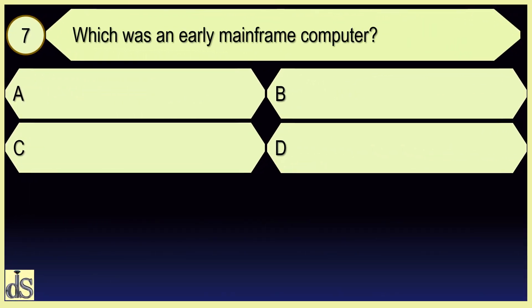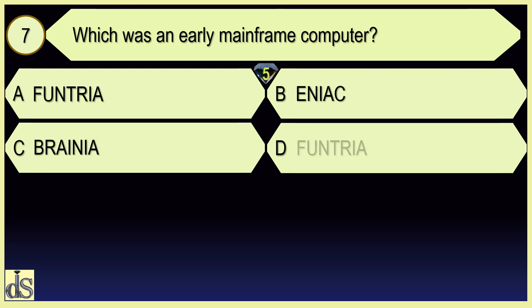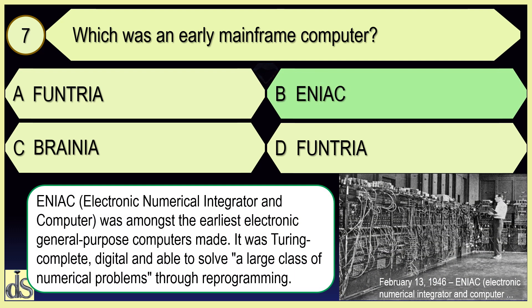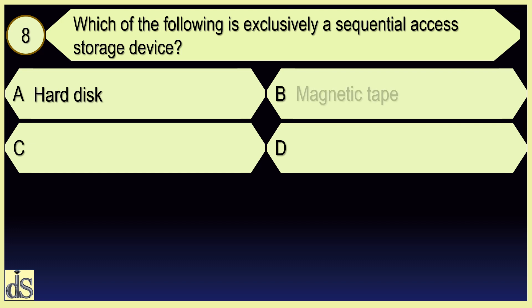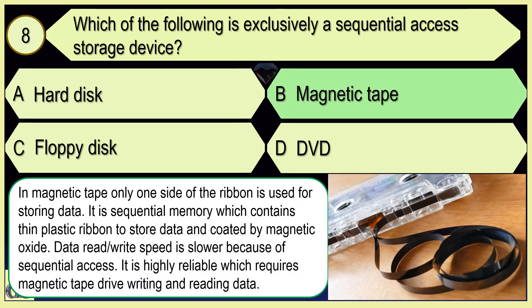Which was an early mainframe computer? ENIAC. Which of the following is exclusively a sequential access storage device? Magnetic Tape.